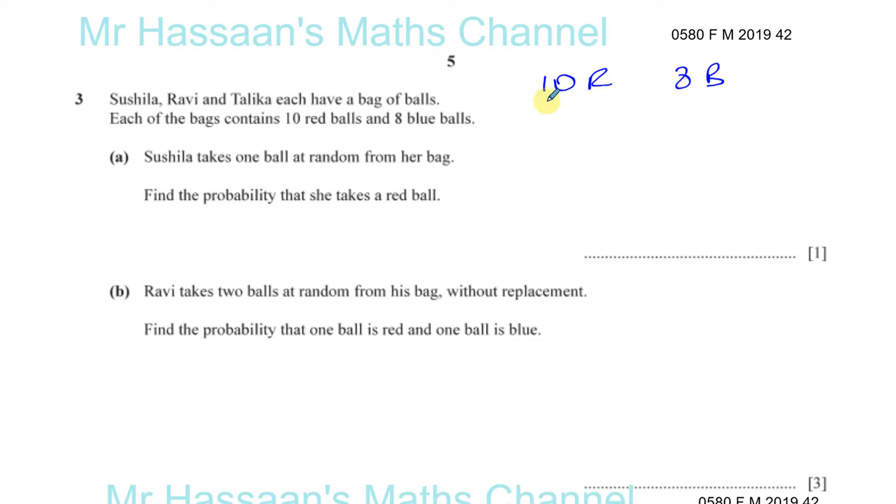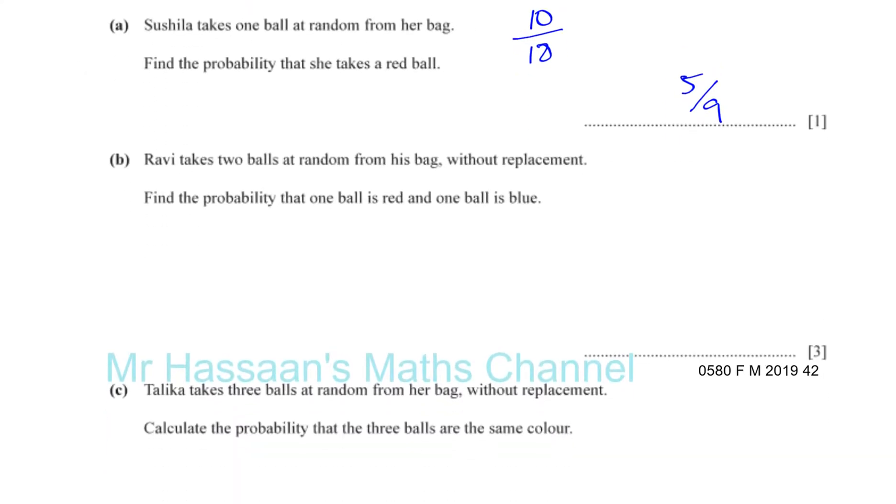So the total number of balls altogether is 18. Shushila takes one ball at random from her bag. Find the probability that she takes a red ball. So there's 10 red balls out of 18 altogether, so that's 5 out of 9. Express it as a fraction is probably best here.